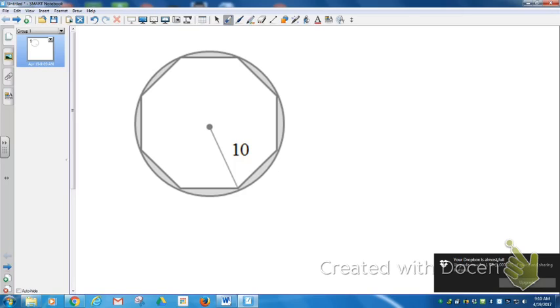We need to find the area of the circle. To find the area of the circle, we're going to use the formula pi r squared.